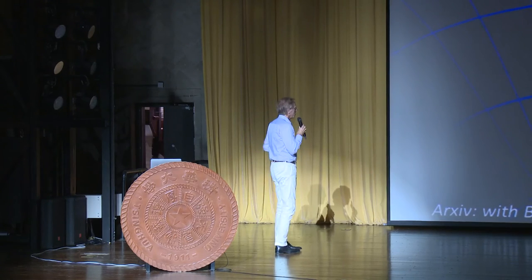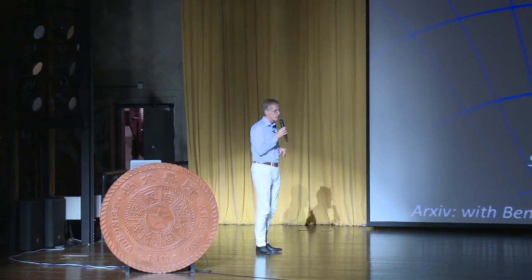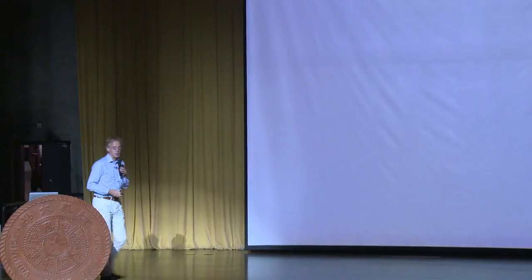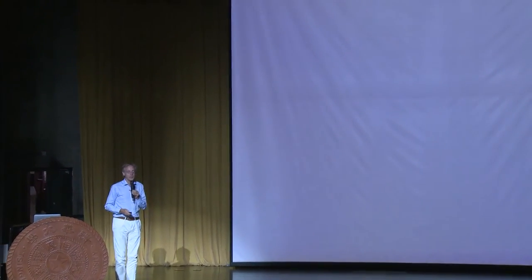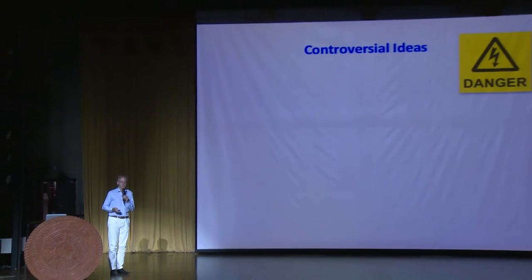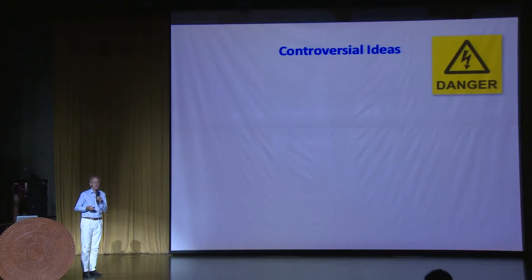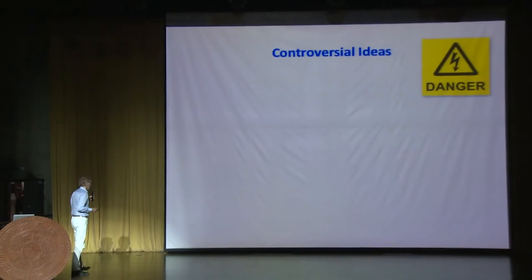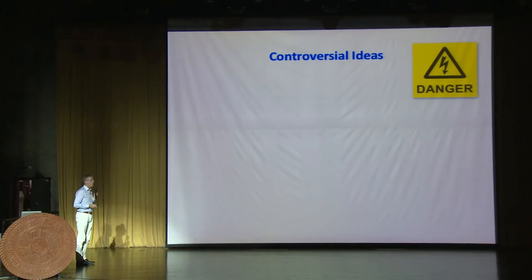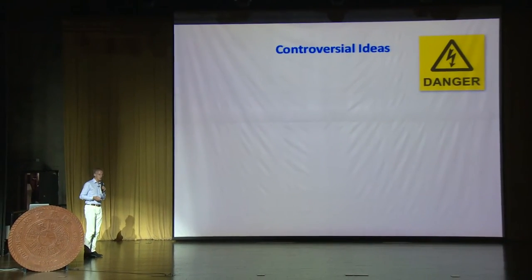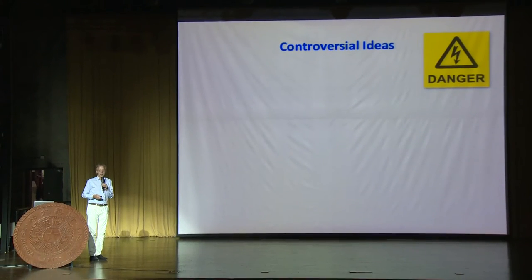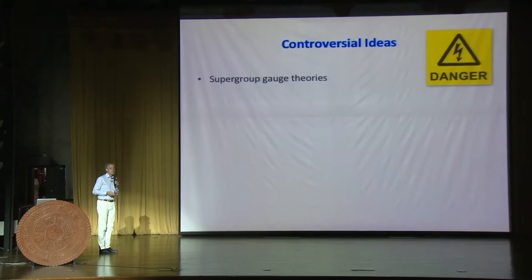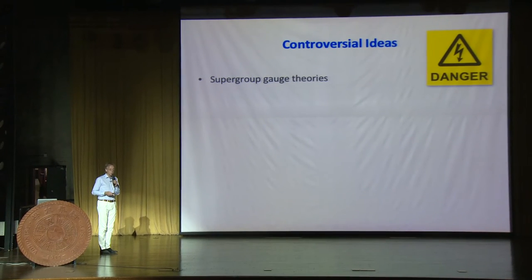I'll be talking about a paper on the archive with Ben Heidenreich, Patrick Jefferson, and Cumrun Vafa, discussing a number of topics that are controversial. One of the things we clearly need in string theory, apart from lots of great papers and technical results, is some kind of crazy ideas about how we can really probe the fundamental properties of our theory. The topic I'm talking about is gauge theories based on gauge groups, which are supergroups.